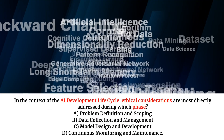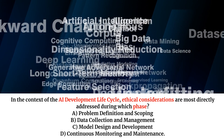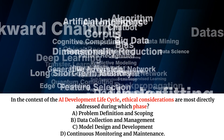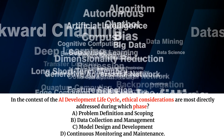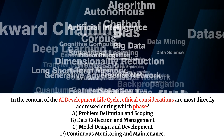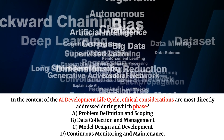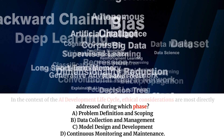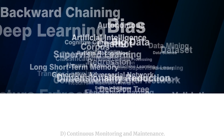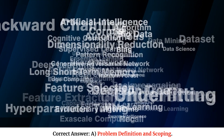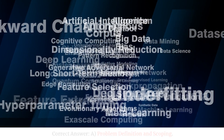In the context of the AI development lifecycle, ethical considerations are most directly addressed during which phase? A. Problem definition and scoping. B. Data collection and management. C. Model design and development. D. Continuous monitoring and maintenance. Correct answer: A. Problem definition and scoping.